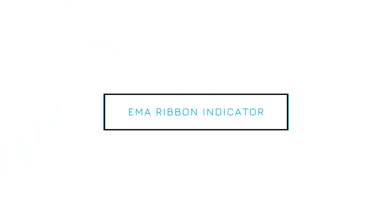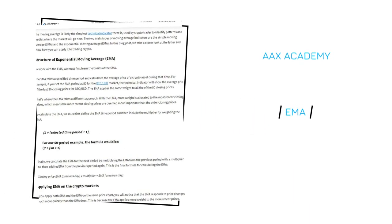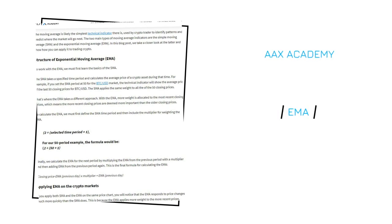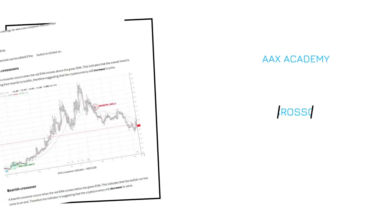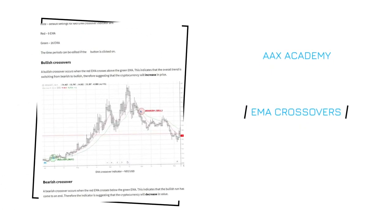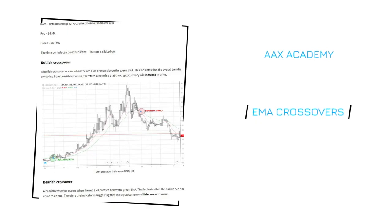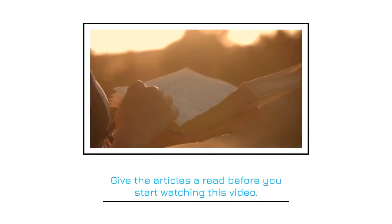In this video, we will be looking at how to build the EMA Ribbon indicator on AAX. If you are unfamiliar with the EMA indicator, there is an article explaining the indicator on the AAX Academy. You'll be able to find this link in the description. Another crucial part of this EMA Ribbon indicator is understanding EMA crossovers. At AAX, we have also created another article on this — the link will also be in the description. We recommend you read through these articles before watching the rest of the video.